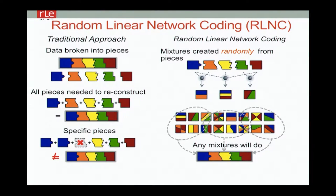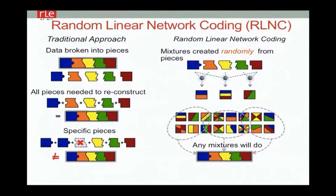I'm going to be talking about random linear network coding. Instead of taking pieces and decomposing them just as packets or chunks and then reassembling them so that pieces have to be individually identified, you're going to take pieces and combine them. Any combination, as long as you have a sufficient number of these combined pieces, will suffice to recover the original data.